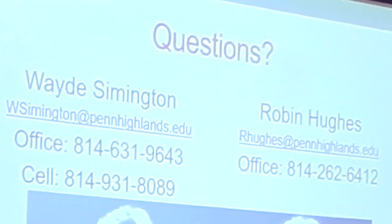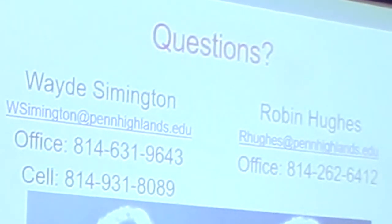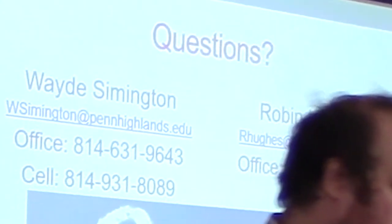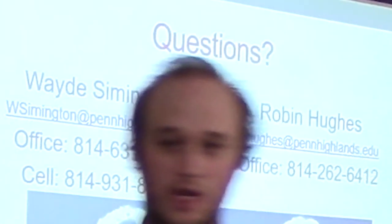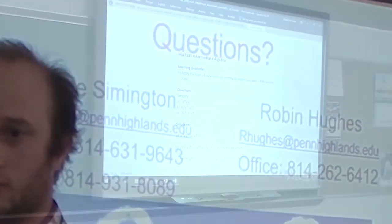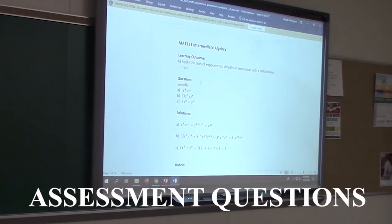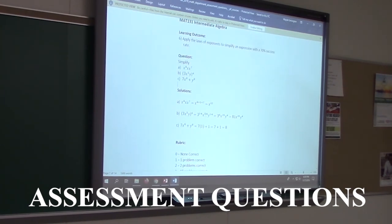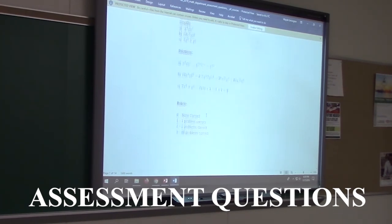Here's our contact information: my name and email, Robin's name and her email, our office phone numbers, and I don't mind if you have my cell phone number if you need anything — I am happy to help. We post the question that we want you to put on your quiz or test, show you how we'd like it to be graded according to a rubric. Every rubric is different depending on the question.